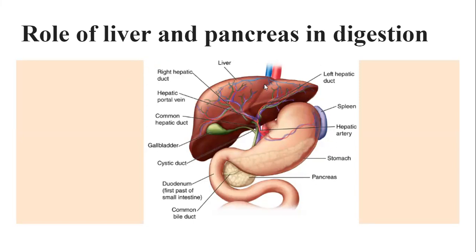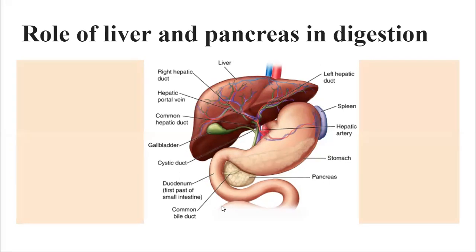You can see here our liver and how it is connected with our stomach. This is our pancreas, and the pancreas is connected by a tube-like structure with our duodenum. So the pancreas is bringing its juice to the duodenum.